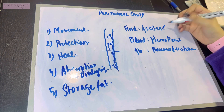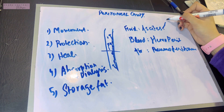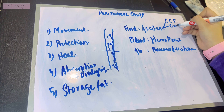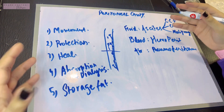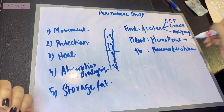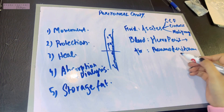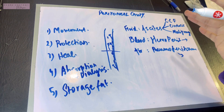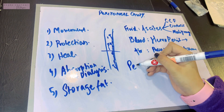The causes of ascites include any condition where there is excess fluid in the body: congestive cardiac failure, cirrhosis of the liver, malignancy, loss of plasma proteins such as in nephrotic syndrome, and traumatic cases causing hemoperitoneum due to internal bleeding. Pneumoperitoneum can be caused by perforation of a gastric ulcer, where the air that lies in the stomach escapes into the peritoneal cavity.